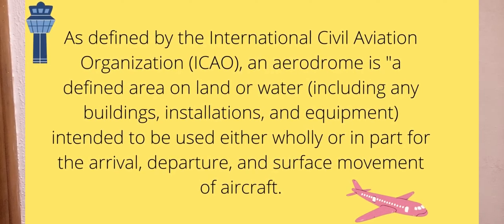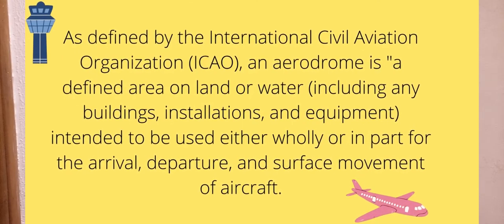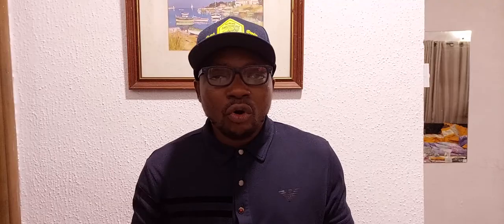An aerodrome is not only where aircraft depart — it includes installations, buildings, equipment, masts, the aerobridge, tankers, fire trucks, the runway, and even offices. All of these make up what we call an aerodrome. As the definition states: installations, buildings, and equipment needed for the departure, arrival, and surface movement of aircraft.